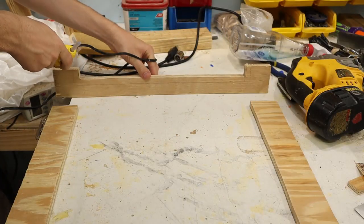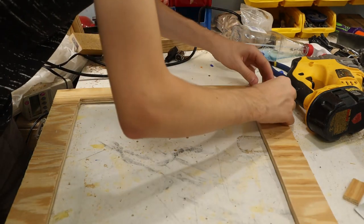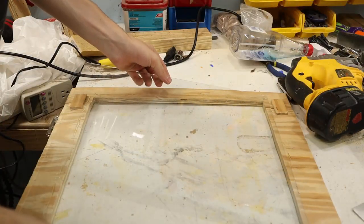I'm gluing this top part on with just hot glue to seal it up, and then I'm just going to reinforce it with these little blocks. And now I just kind of put the glass on.